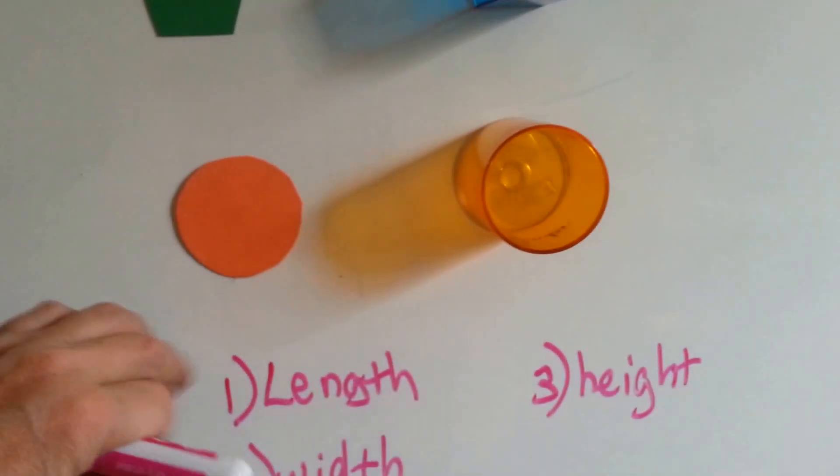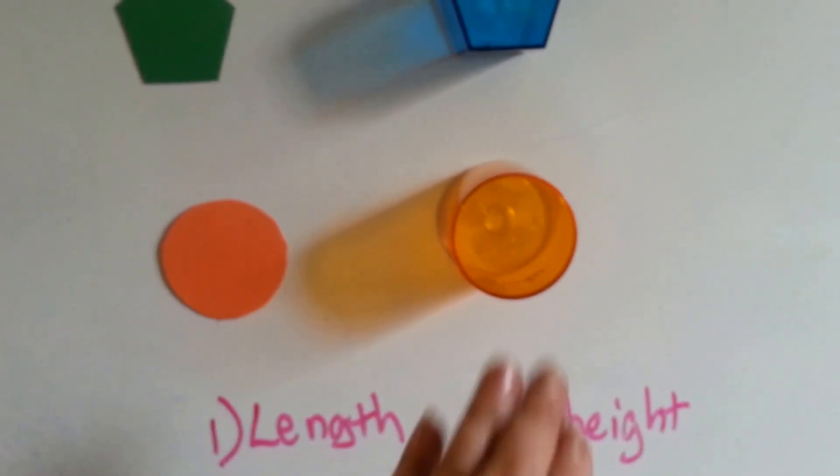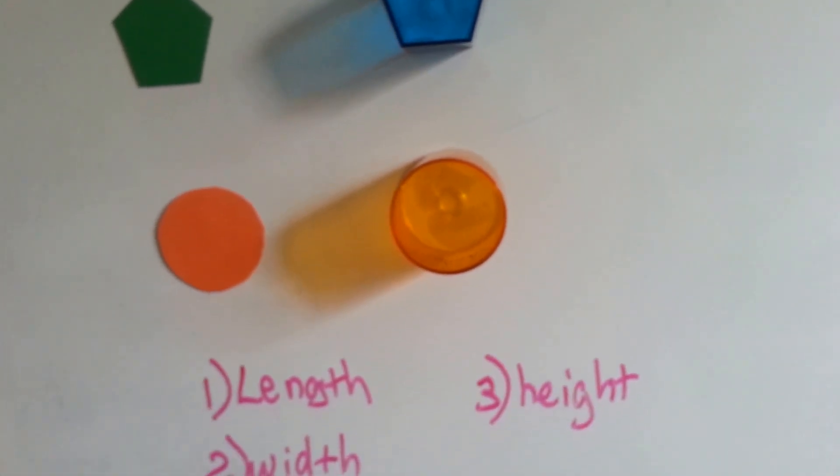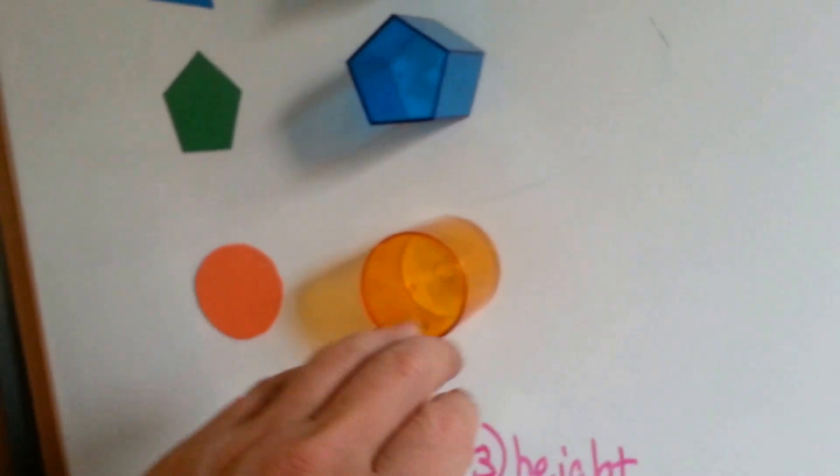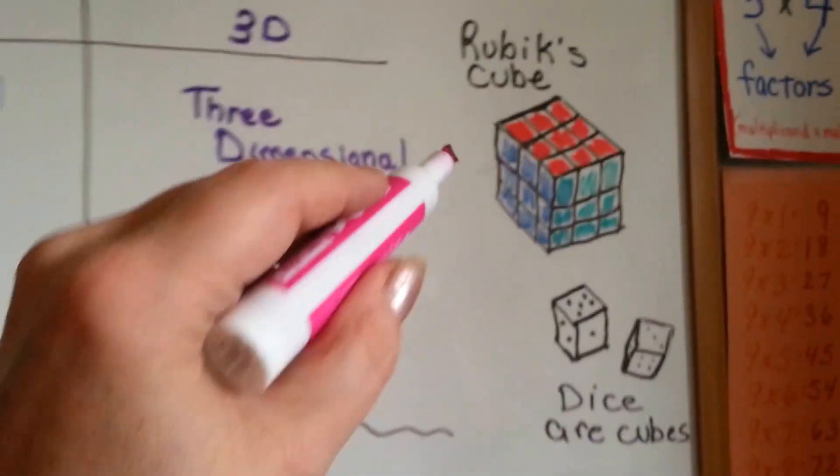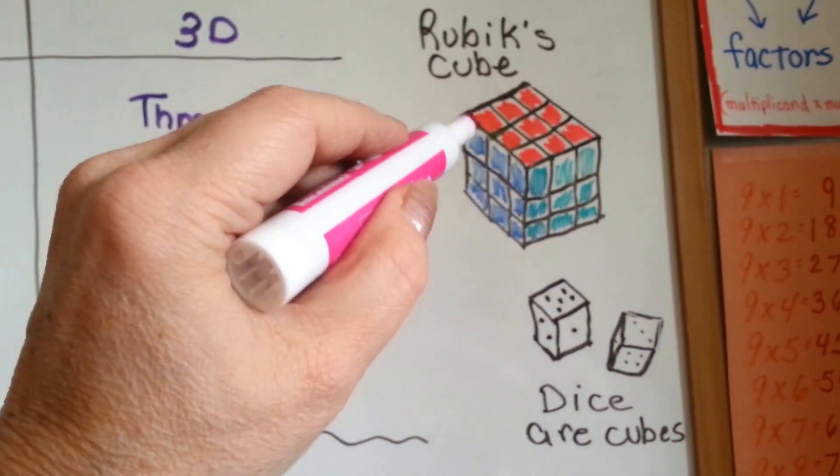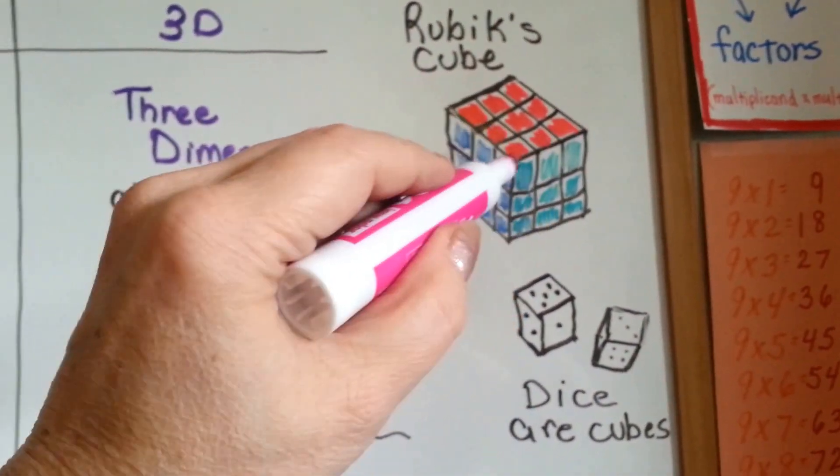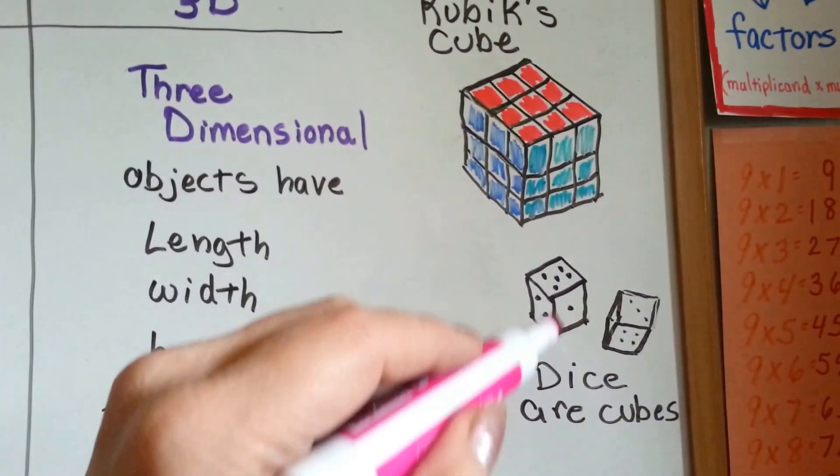Flat objects have length and width. 3D objects have length and width and height to them. So, think of the Rubik's Cube. It has the length of the top and the width of the top, but it also has the height. Or dice. Those are 3D, three-dimensional.